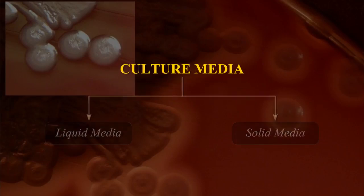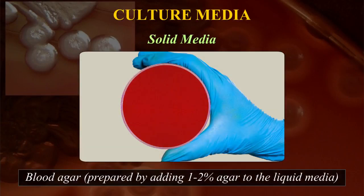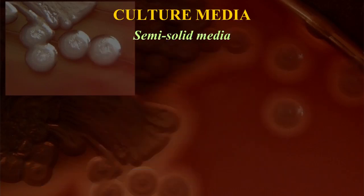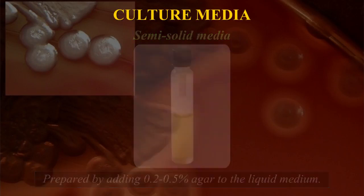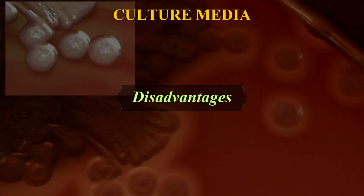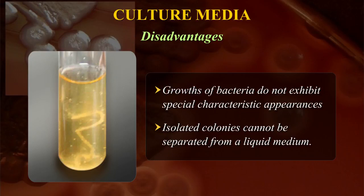Culture media can be broadly divided into two major groups: liquid media such as peptone water and nutrient broth, and solid media such as blood agar, which is prepared by adding 1–2% agar to the liquid media. Semi-solid media are also used, which are prepared by adding 0.2–0.5% agar to the liquid medium. Though liquid media can be fortified with different nutrients and permit growth of most bacteria, growths of bacteria do not exhibit special characteristic appearances and isolated colonies cannot be separated from a liquid medium.